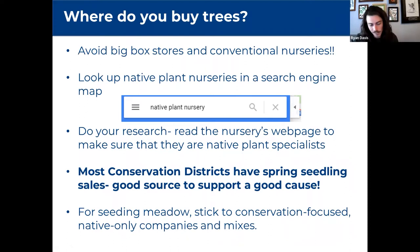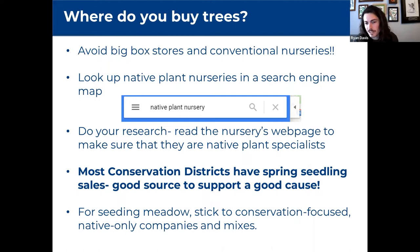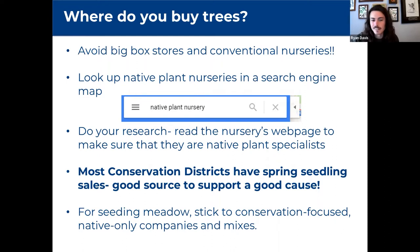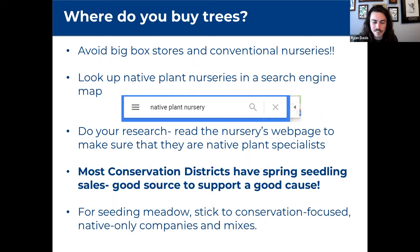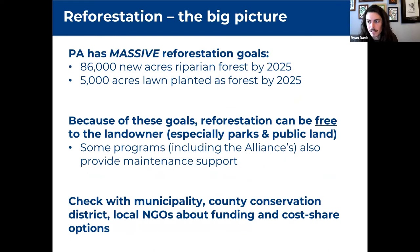For sourcing plants, avoid big box stores and conventional nurseries — they sell non-native stock. Spend about 10 minutes researching local native plant nurseries. Many are small operations you can call directly to ask about discounts and stock availability. For landowners doing their own replanting, local conservation district seedling sales in spring are a great affordable option for native, locally sourced trees.